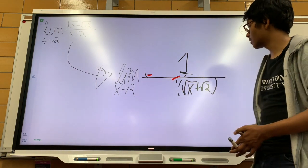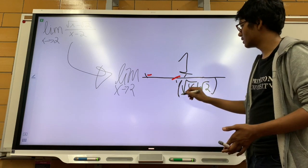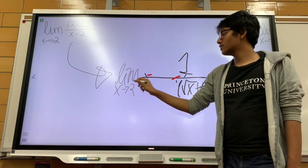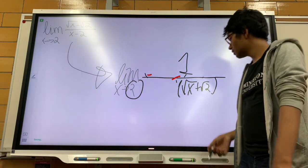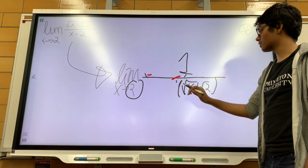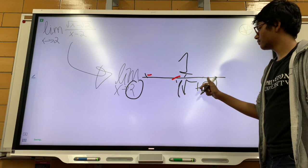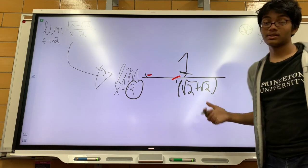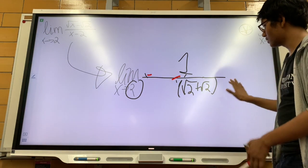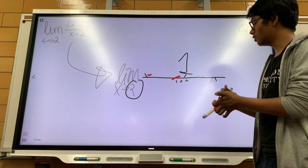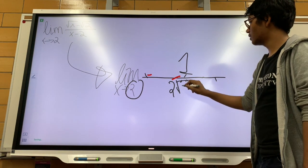So I'm left with a 1 in the numerator and square root of x plus square root of 2 in the denominator. Now, I know that x is approaching 2. So I can just substitute in 2 for x over here. So if I do that, what do I get? I get 1 over the square root of 2 plus the square root of 2. And that, of course, just simplifies to 2 radical 2.